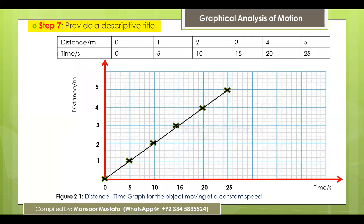The last step is providing a descriptive title to your graph. For example, a suitable title could be: 'A distance-time graph for an object moving at a constant speed.' These are the steps you have to follow while drawing a scientific graph.